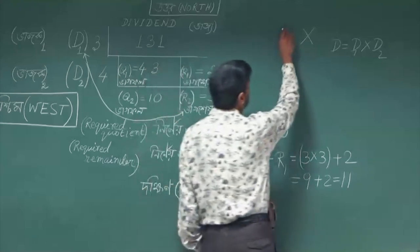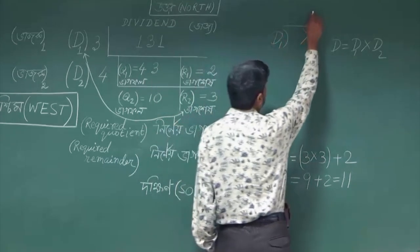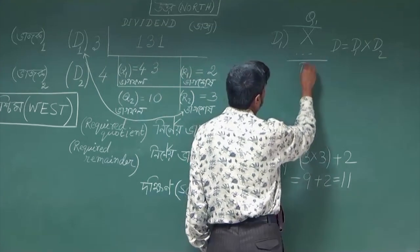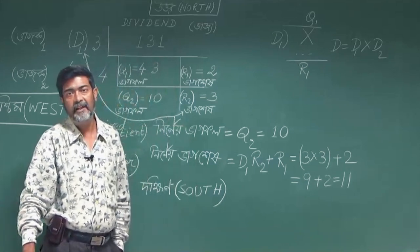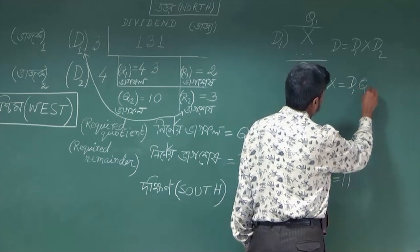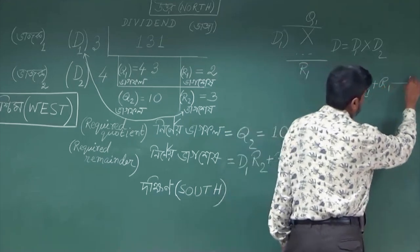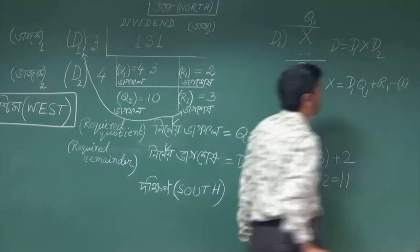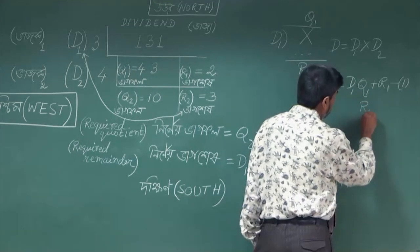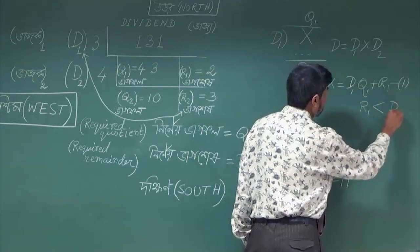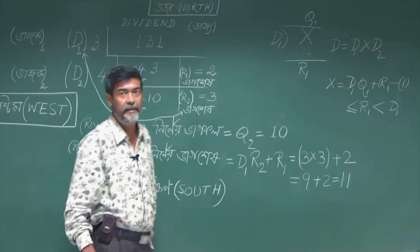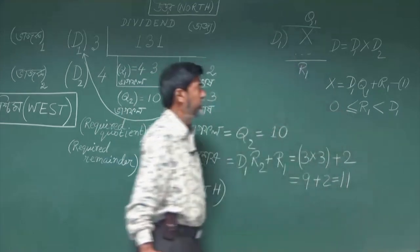In the first stage, x is to be divided by d1. Suppose q1 is the quotient and r1 is the remainder. Then by using the algorithm of division, we get x is equal to d1 into q1 plus r1 — call it equation 1. The remainder r1 must be strictly less than the divisor d1, but it may be 0 when x is exactly divisible by d1.